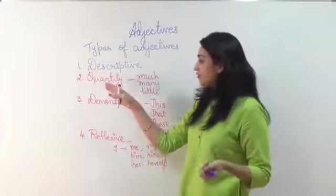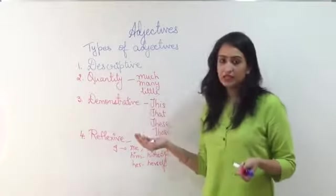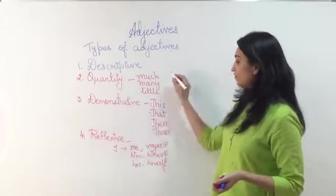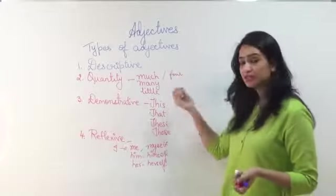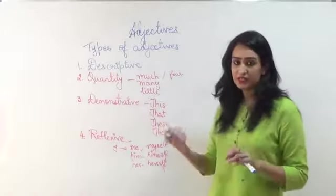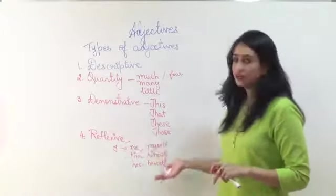Descriptive, we describe everything. Quantity, much. Then demonstrative, it can also be four, five, six. This, that, those. And then reflexive.